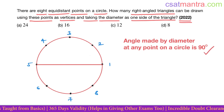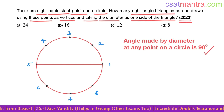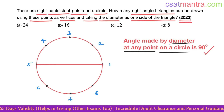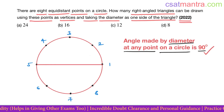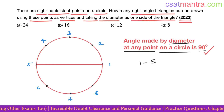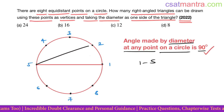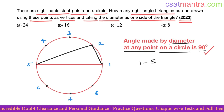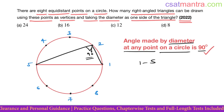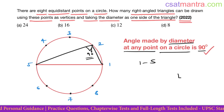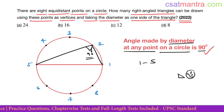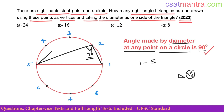The angle made by the diameter at any point on a circle is 90 degrees — any point. This is the diameter, points one and five. So the angle made by the diameter at point two is 90 degrees, making it a right angle triangle. In a triangle, if one angle is 90 degrees, that's a right angle triangle.